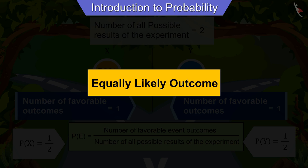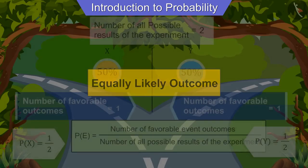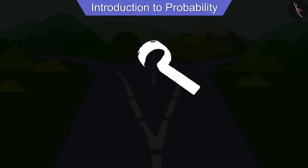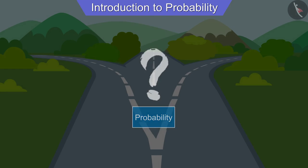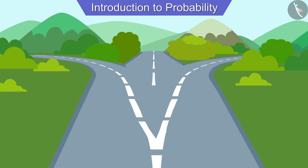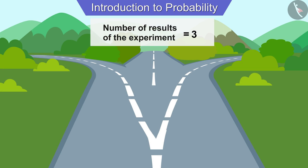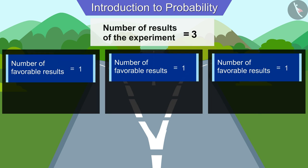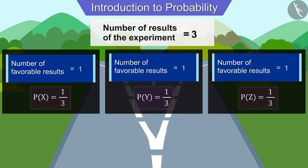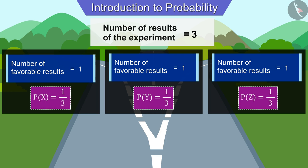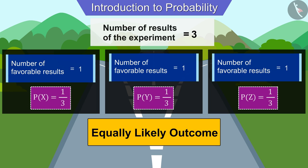Here the probability for both roads is the same, so we call them equally likely outcomes. If we had three roads instead of two, the total number of possible outcomes becomes three, and the number of favorable results for each road will be one. Therefore the probability of each road being correct is one third. Since the probability is the same for all three roads, we can also call them equally likely outcomes.